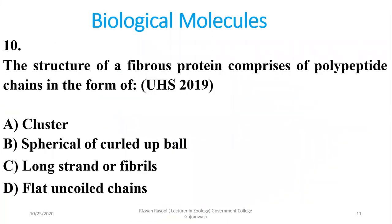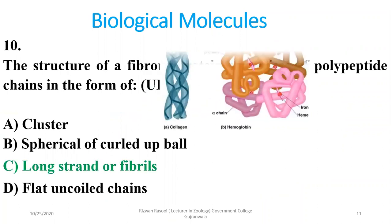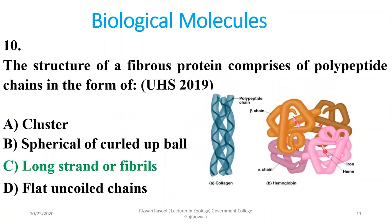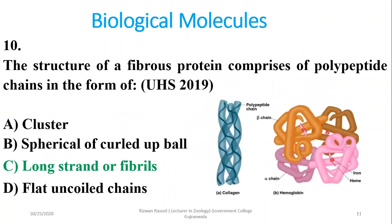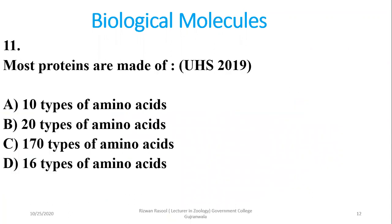Question 10: The structure of a fibrous protein comprises polypeptide chains in the form of fibrils, while globular proteins are in the form of clusters or spherical balls. The right option is Charlie.